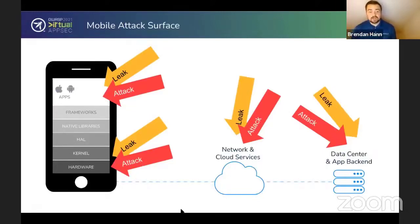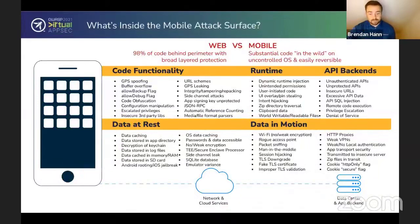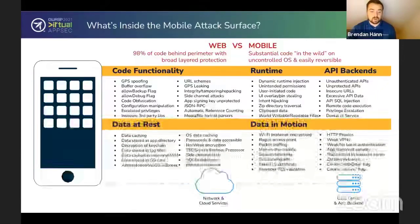The mobile attack surface is broad. Attackers can take advantage of the app itself, the hardware it's installed on, the network and cloud services it utilizes, and the data center and app backend that it relies on. All of these are potential avenues for data leakage and attacks. There are five big areas attackers can exploit: the code developers write, data at rest — both of which exist on the physical phone — and once the app is running, attackers can also capture data in motion from insecure data transportation protocols, or abuse API backends.